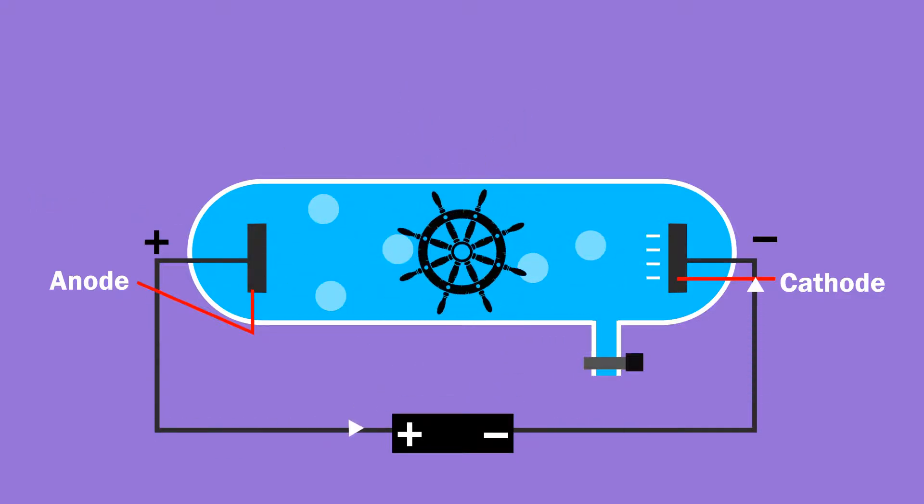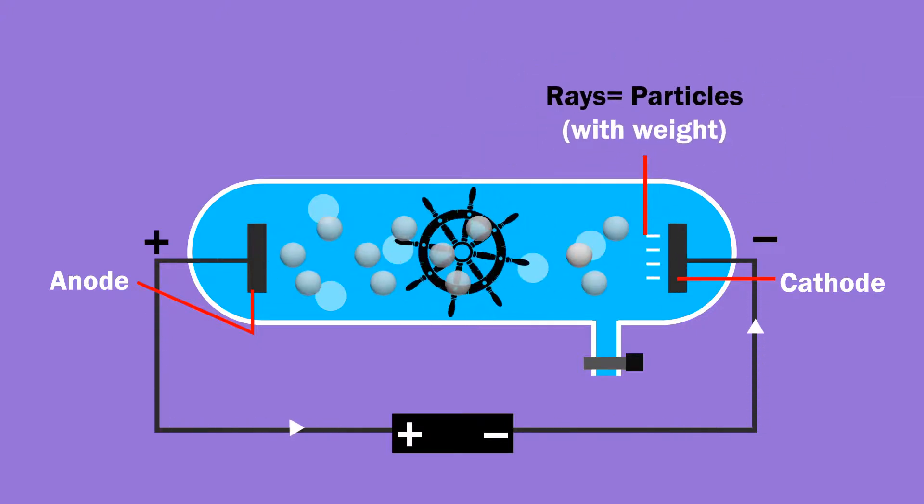When a free-to-move paddle wheel was kept in the path, the paddles started moving. This confirmed that the ray is made of particles with some weight.